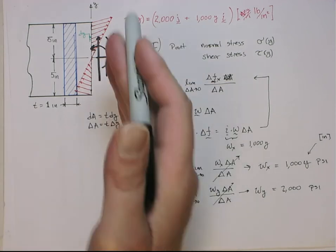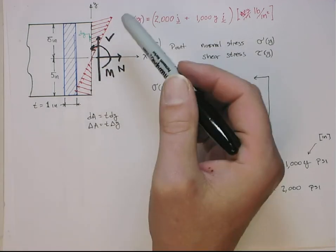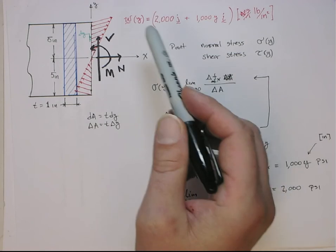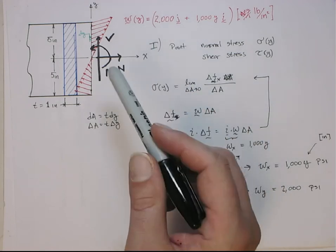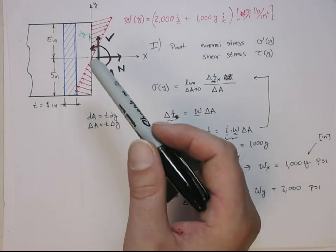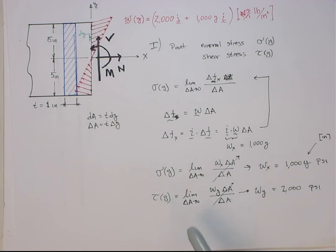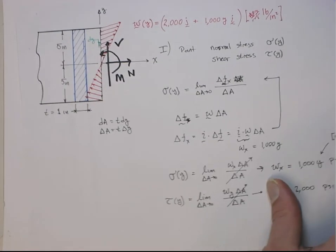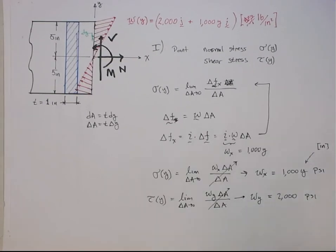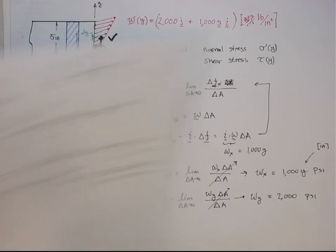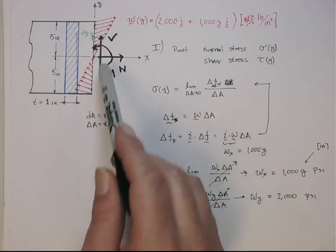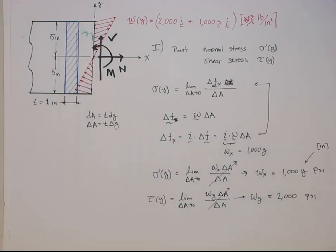So physically this is really what happens. Inside a component there is actually this internal distribution w, usually we don't know it, and then these average quantities, the average normal and shear stresses and these net internal reaction forces and moments arise from them. They don't really physically exist, they're just a way that we handle the problem.